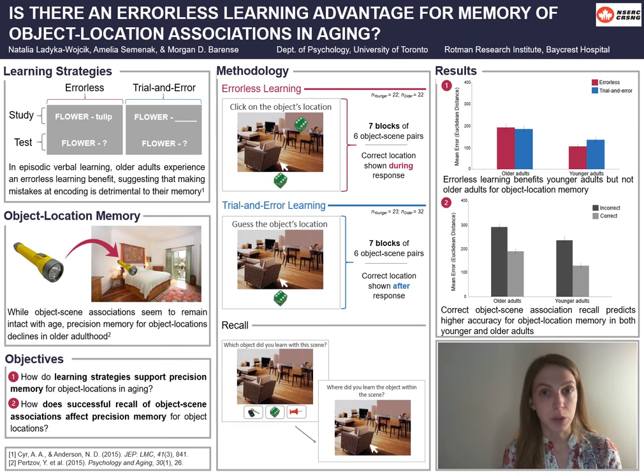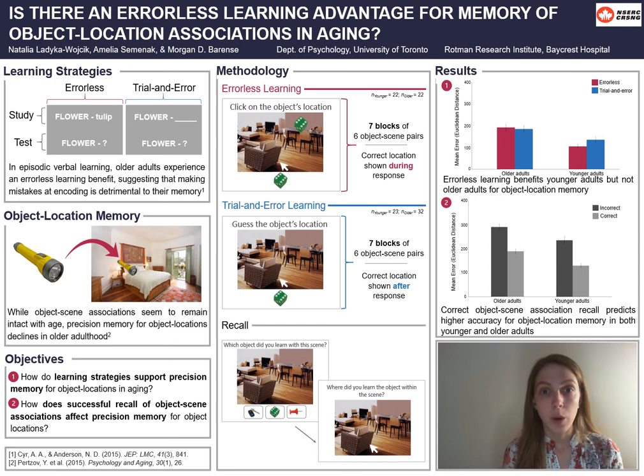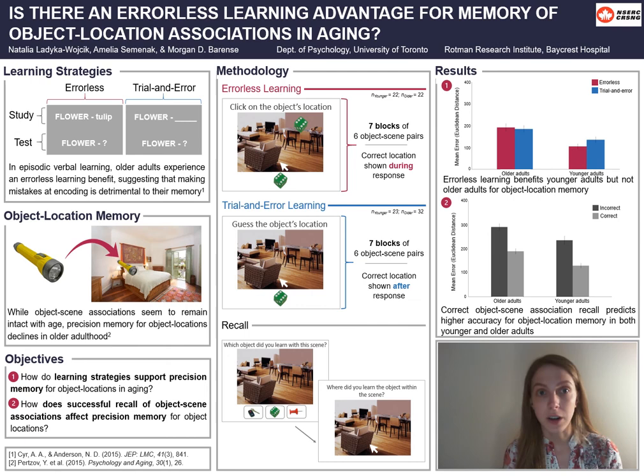Perhaps most excitingly, older adults' average precision accuracy for object locations when they correctly recalled the object association was better than younger adults when they incorrectly recalled the object-association pair. In short, these findings highlight that healthy older adults, at least in our sample, seem to be performing fairly well in object location precision memory relative to younger counterparts, but do not benefit from a particular learning strategy at encoding. Thank you so much for listening and I hope to have a chance to chat or to answer any follow-up questions you may have.